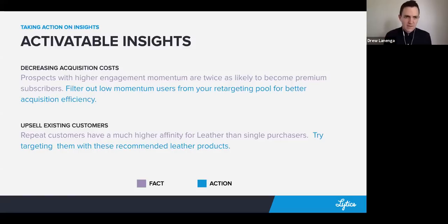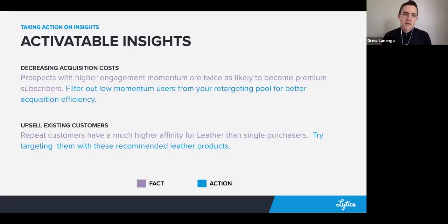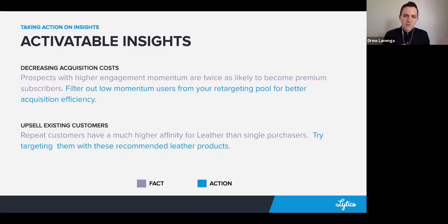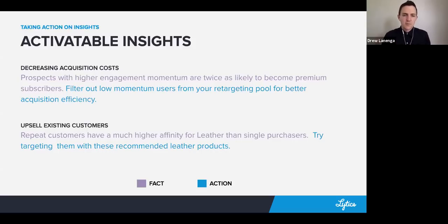An activatable insight might look something more like this — we'll look at two examples. One is for decreasing acquisition costs. The fact might be: prospects with higher engagement momentum are twice as likely to become premium subscribers. That tells you something explainable and novel about your premium subscribers. The action might be: filter out the lower-momentum users from your retargeting pool, because they're not going to convert anyway, improving your efficiency. This action is very tightly coupled to that fact and executable from an execution tool like a customer data platform.